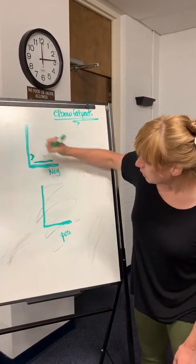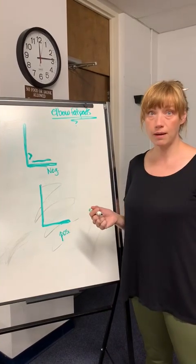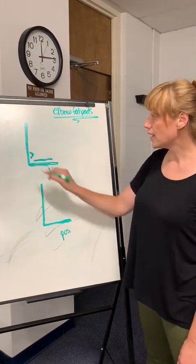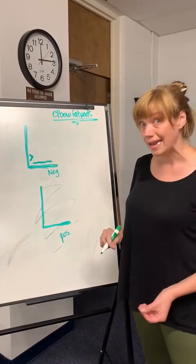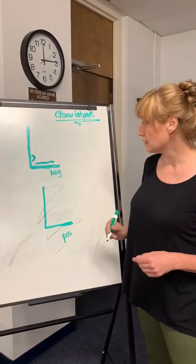Right here, we would have an anterior fat pad. So that's normally what you would see on a negative, no breaks, lateral elbow.